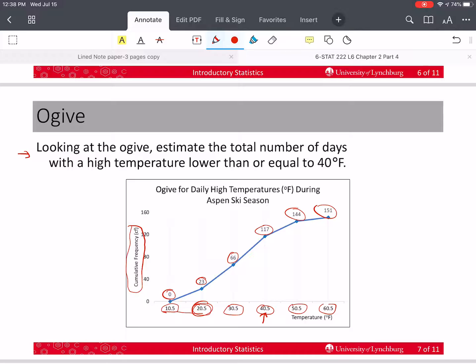So, and we know that we're only using whole numbers. So we look here and we see, well, 40 would be within this class to the left of this value. And so we go up and we see that the answer is going to be 117 days. So out of 151, 117 days had a high temperature that was 40 or lower.